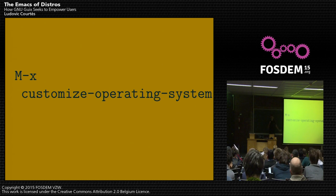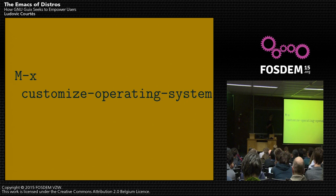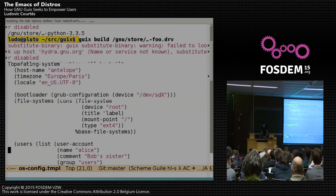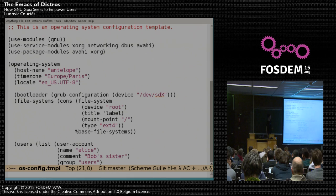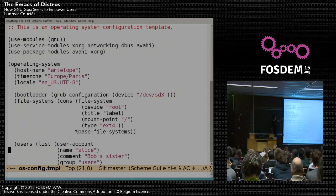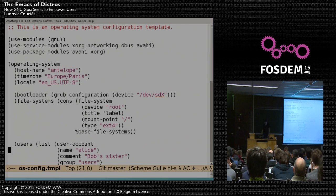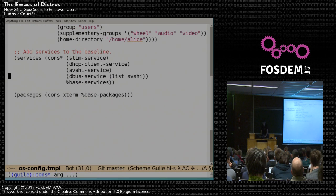So far I was talking about packages themselves. But we can go a bit further — we actually have a similar approach to operating system configuration. What does it look like? If you want to install an operating system or modify its configuration, you just write a declaration of what you want your operating system to look like. You give a bunch of usual details like the hostname, timezone, bootloader configuration, file systems, user accounts, services, and globally visible packages.